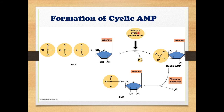There is an enzyme called adenylyl cyclase. Adenylyl cyclase breaks the bond in ATP and liberates two phosphate groups. The remaining phosphate, adenosine, and ribose sugar form cyclic AMP. Once formed, cyclic AMP can then be broken down by another enzyme called phosphodiesterase.